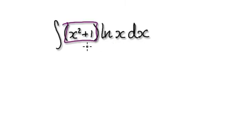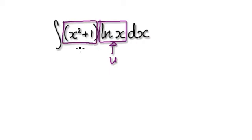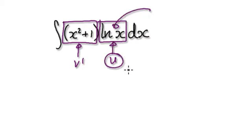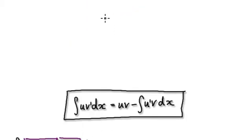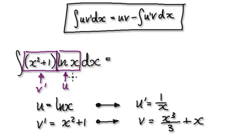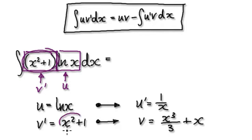Instead, I know your gut instinct tells you to make this to be your u, but you should make ln(x) to be your u. And then make the polynomial to be your v prime. So to integrate this whole thing, make ln(x) to be your u, because later on when we come to differentiate it, it will be a lot easier. And then make this to be your v prime.